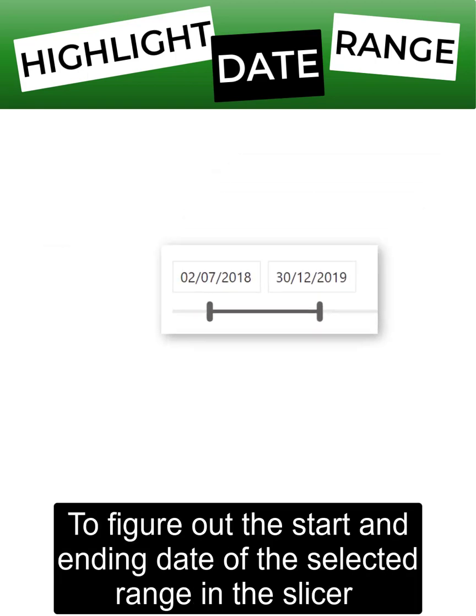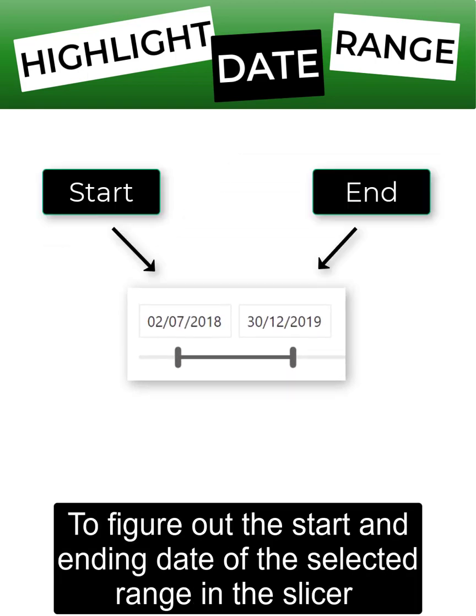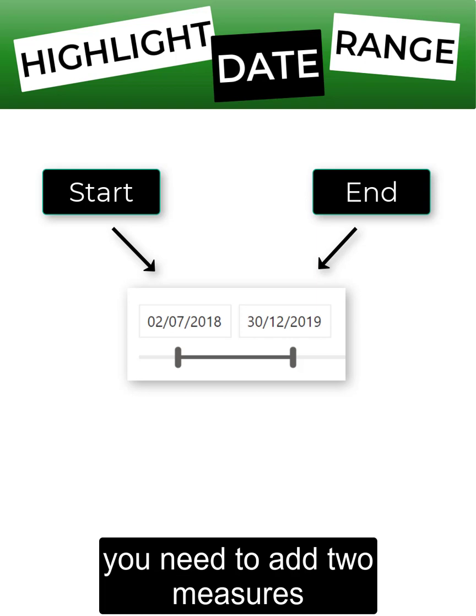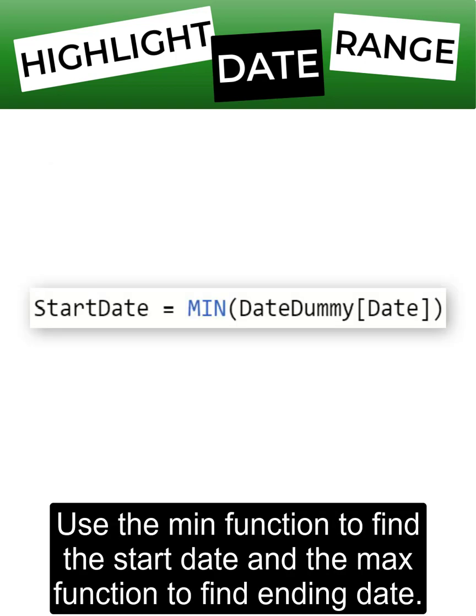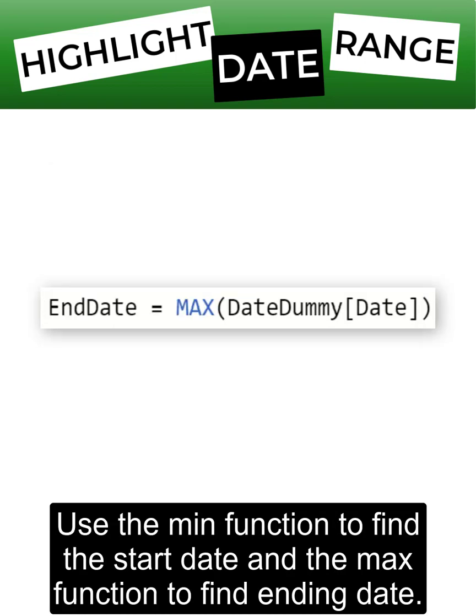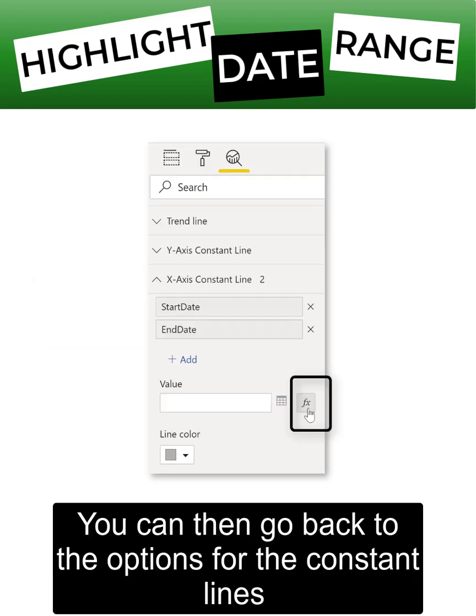To figure out the start and ending date of the selected range in the slicer, you need to add two measures. Use the MIN function to find the start date and the MAX function to find the ending date.